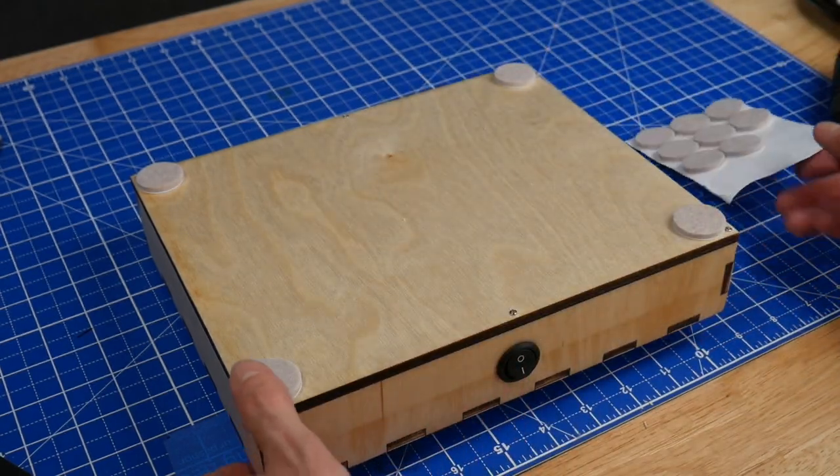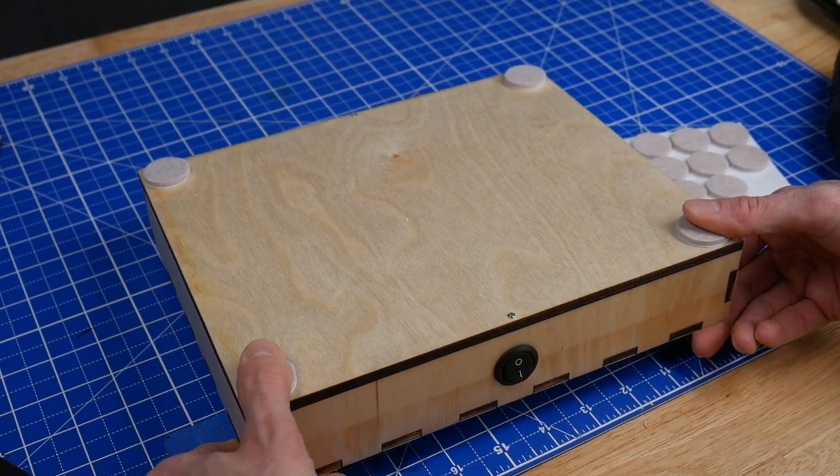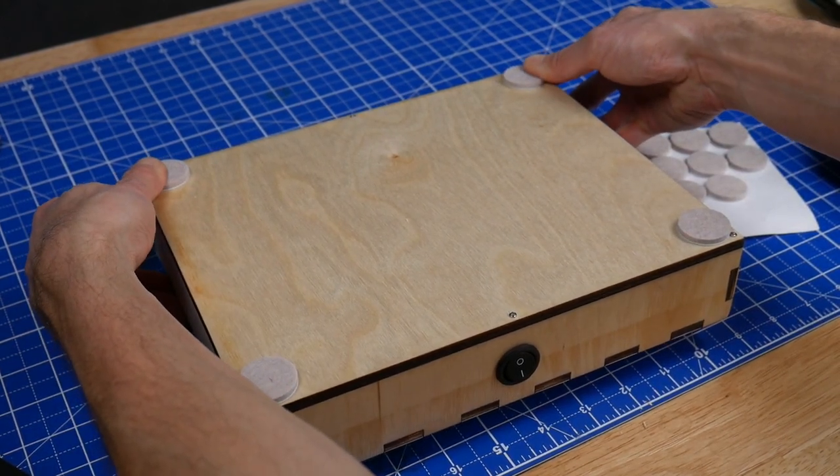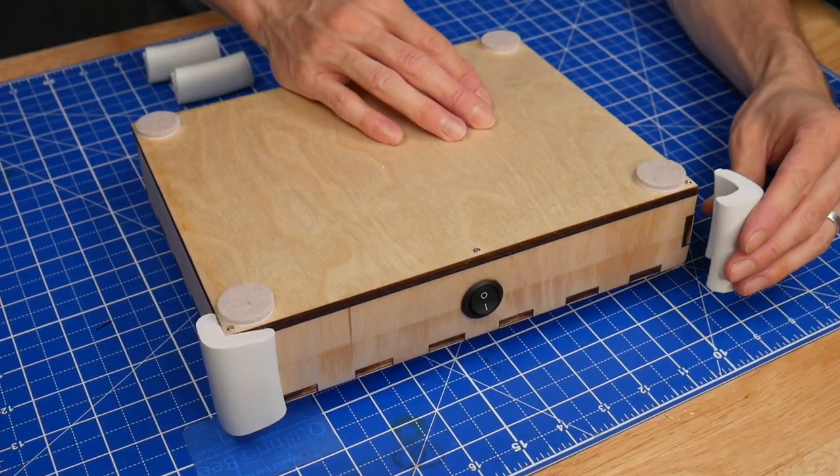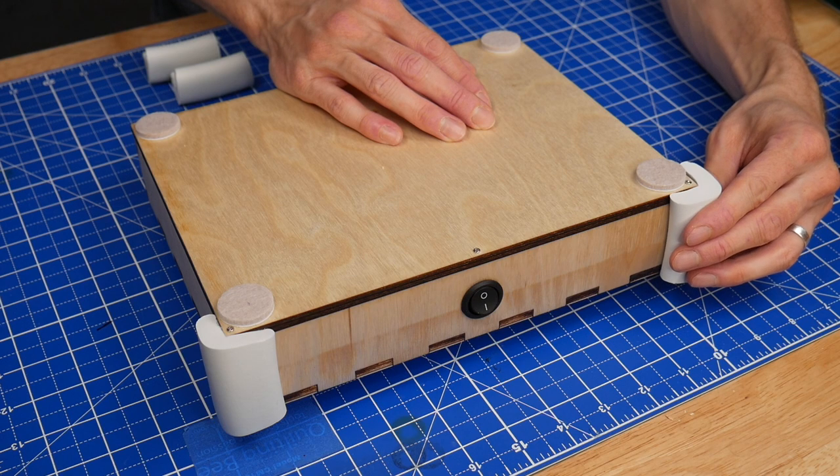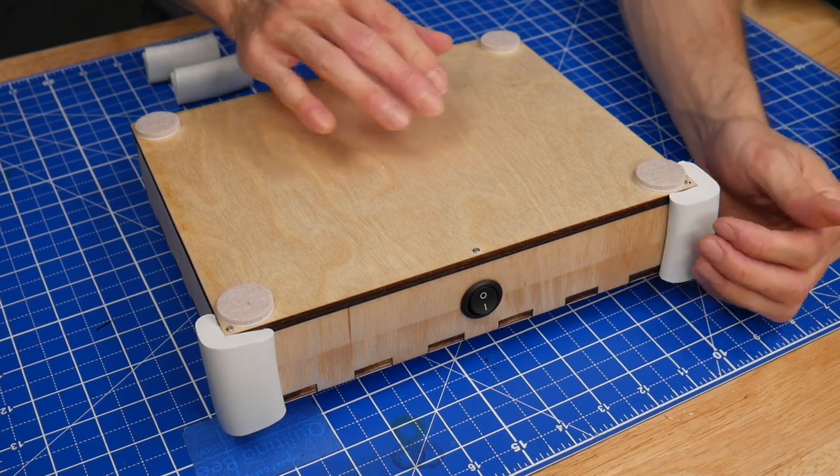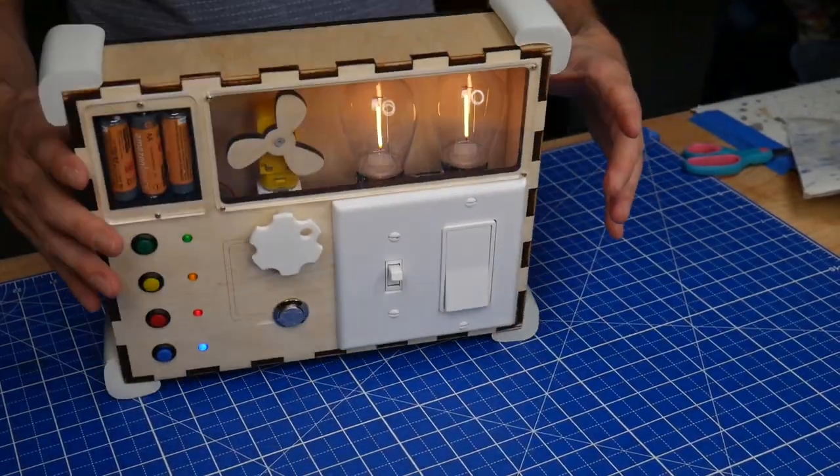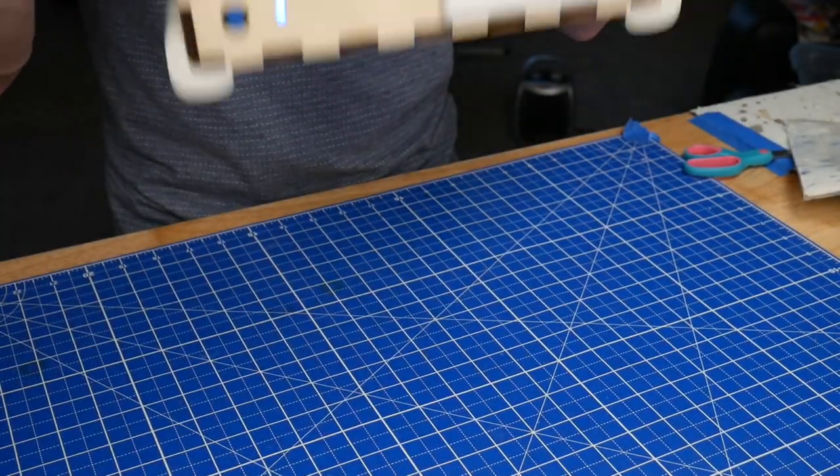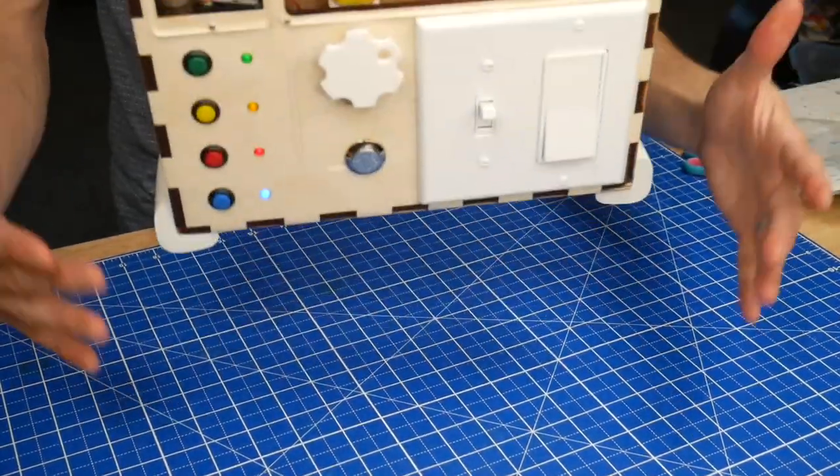I also added some of these felt pads to the bottom so the screws don't scrape up any surfaces that the box is on. And I added some of this child safety foam onto the corners, and part of this was to keep my kids toes safe in case the box fell off of the couch or something, but it also keeps the button box itself safe. You can see I gave it a quick drop test. And it holds it pretty well from about 18 inches above my work table.